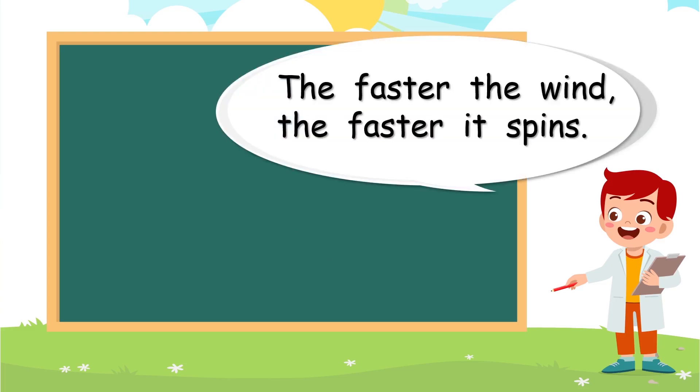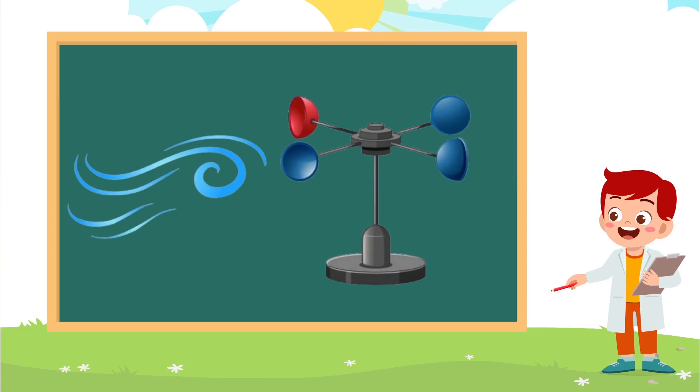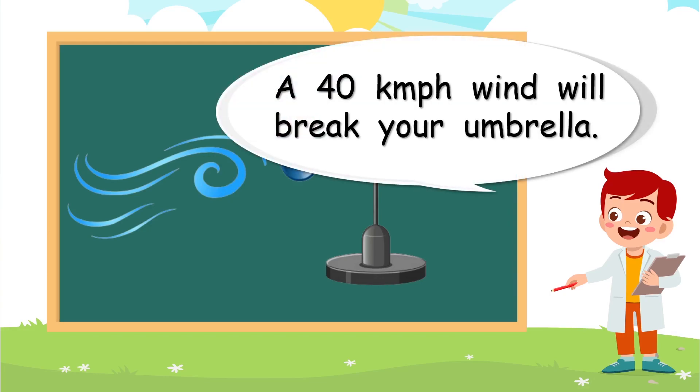The faster the wind, the faster it spins. The wind will blow into those four small cups and it will spin around. I'm going to say the name again: anemometer. A 40 kilometer per hour wind will break your umbrella. Oh dear, we don't want a 40 kilometer per hour wind then.